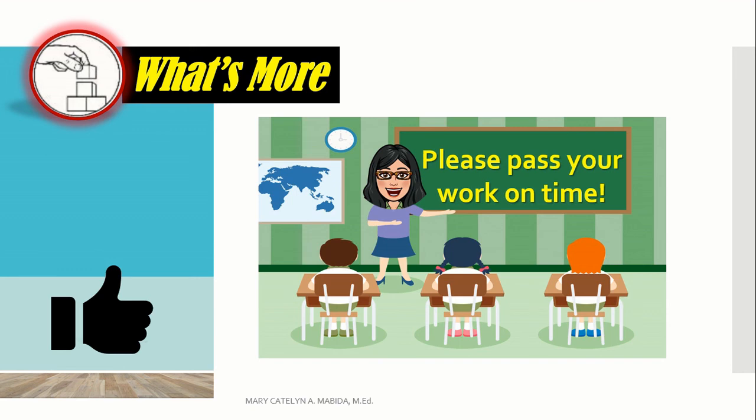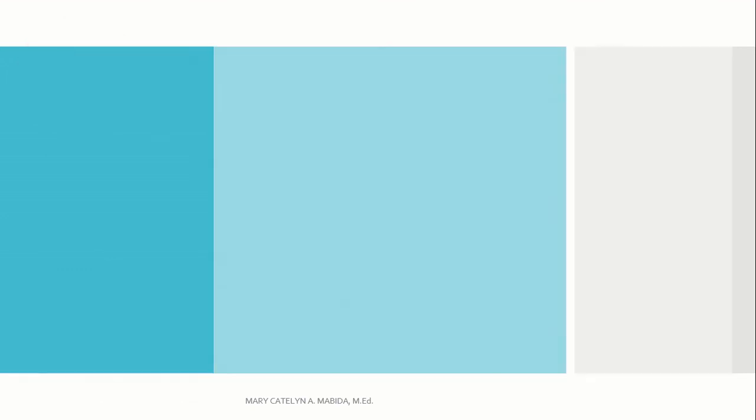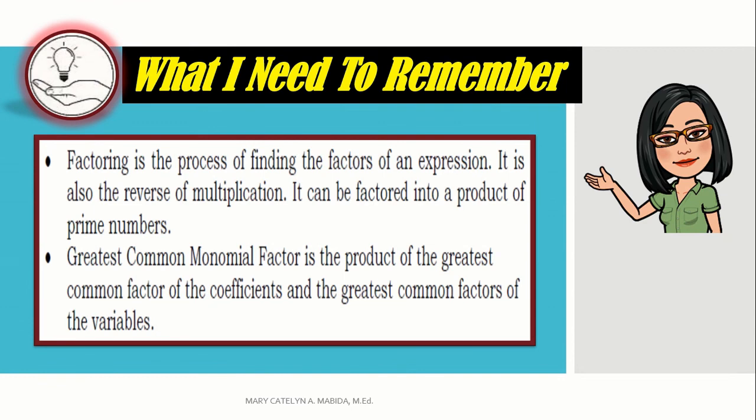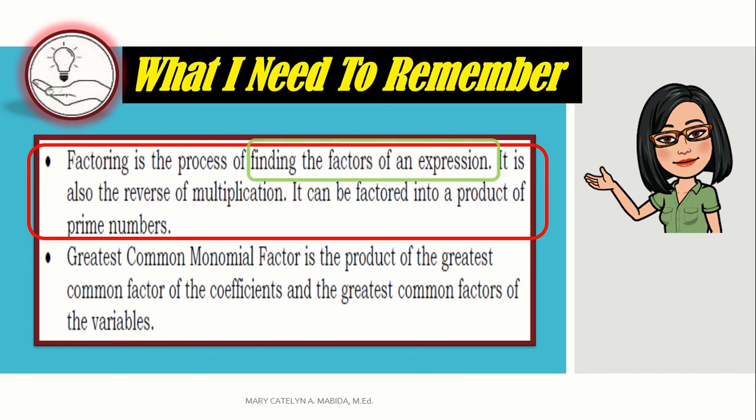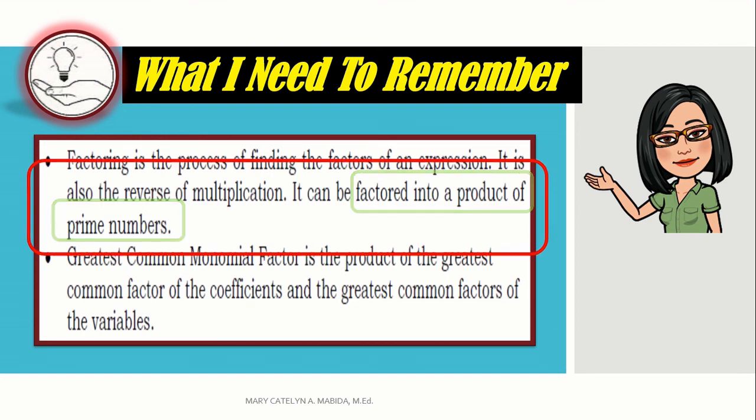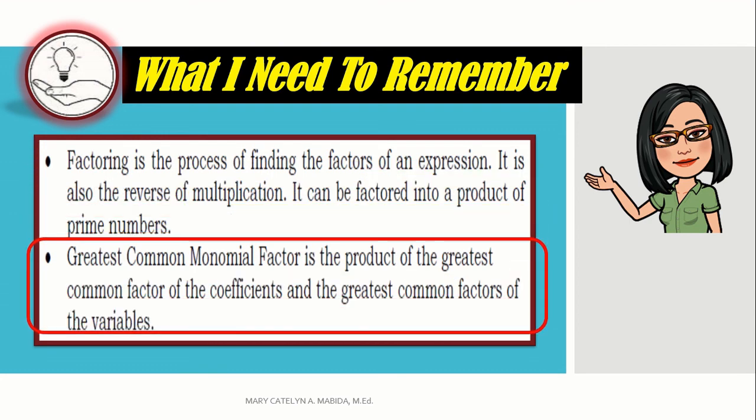What you need to remember: factoring is the process of finding the factors of an expression. It is also the reverse of multiplication. Now, it can be factored into a product of prime numbers, and the greatest common monomial factor is the product of the greatest factor of the coefficients and the greatest common factors of the variables.